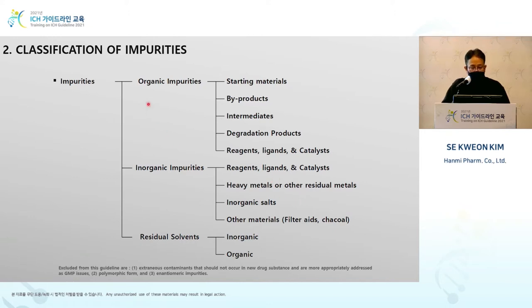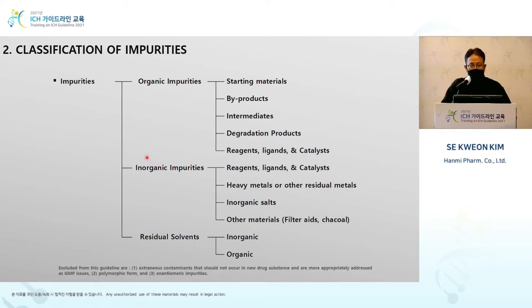The classification of impurities: the guideline categorizes impurities into three groups — organic, inorganic, and residual solvent — and I will explain each category with the following slides. Bioburden and endotoxin, impurities caused by external contaminations, are not dealt with in this guideline; they are addressed in the GMP guideline. Enantiomeric impurities and polymorphic forms are also not addressed in this guideline.